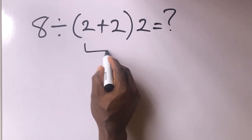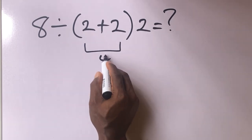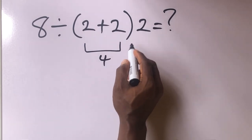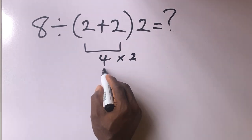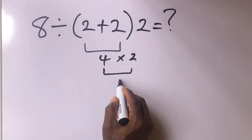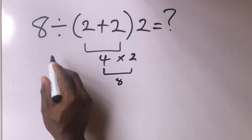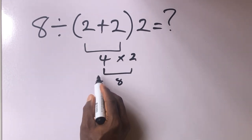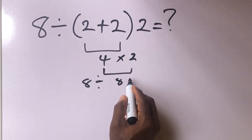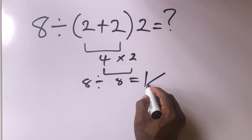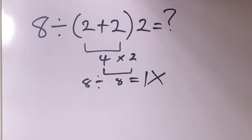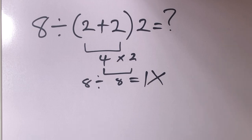2 plus 2 will give us 4. Remember there's an invisible multiplication here — times 2 — which is equal to 8. So 8 divided by 8 is equal to 1. But this answer is not correct.